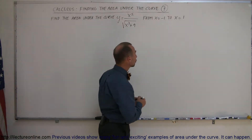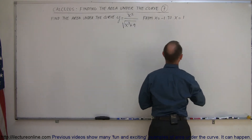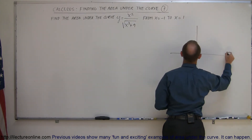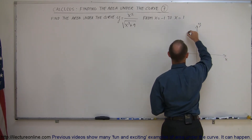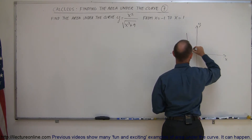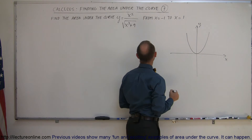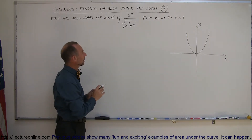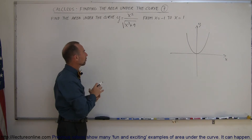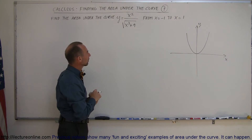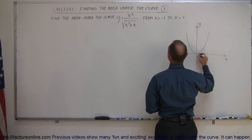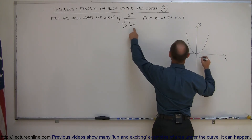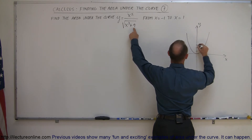Let's graph the numerator and the denominator separately. If I graph the numerator, y equals x squared, that's a parabola opening upward with the vertex at the origin. Then I'm going to graph just the denominator separately: y equals the square root of x cubed plus 9. On the positive end, when x equals 0, the square root of 9 is 3, so the curve starts at y equals 3 and continues from there.